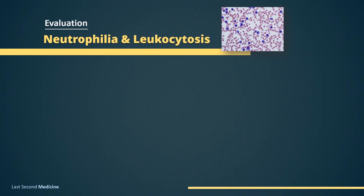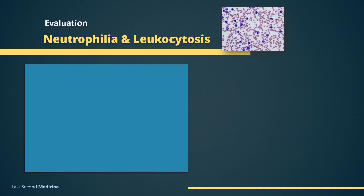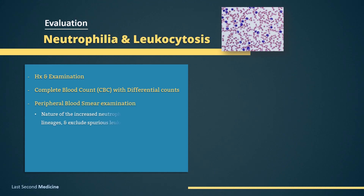How to evaluate? The urgency of evaluation of neutrophilia is usually guided by the patient's clinical condition, the presence of worrisome findings like leukemic blasts on peripheral blood smear, disseminated intravascular coagulation, and the degree and rate of rise of neutrophilia. Initial clinical evaluation should include a good history and physical examination, then a complete blood count with differential, and examination of the peripheral blood smear. Peripheral blood smear examination is important to define the nature of the increased neutrophils, identify abnormalities in other cell lineages, and exclude spurious leukocytosis.